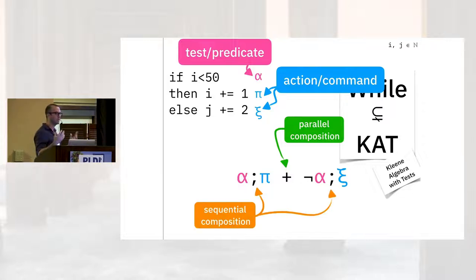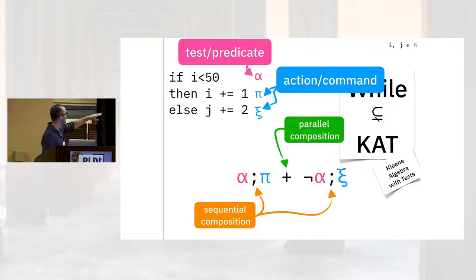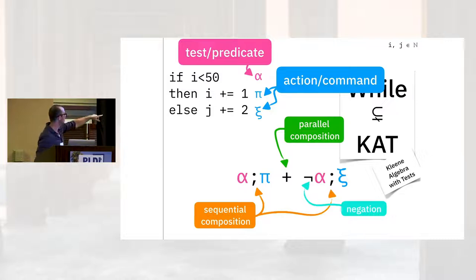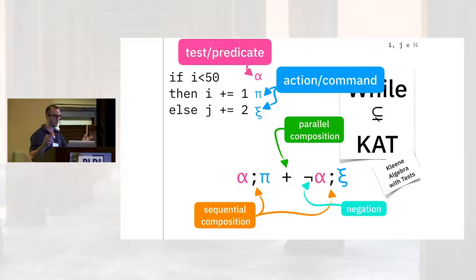Sequential composition says do these things in order. When alpha holds, do pi — that is, when i is less than 50, increment i. And when alpha does not hold — we've got that negation there — then do psi, that is double increment j.